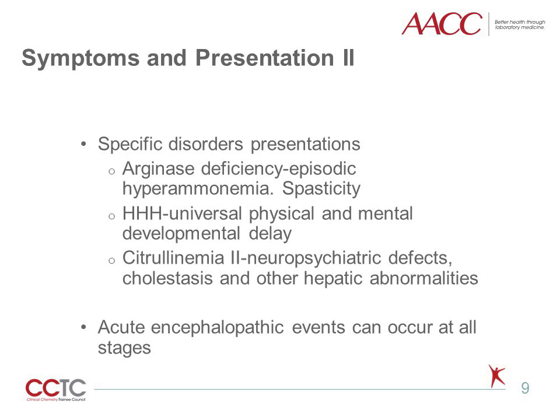Patients with arginase deficiency present in later infancy to preschool years with delayed physical and intellectual growth. They can also have severe spasticity affecting the lower extremities. Children with citrullinemia type 2 can have cholestasis and fibrosis, developmental delay, hypoproteinemia, and hypoglycemia. Citrullinemia type 2 adults can have regular episodes of elevated ammonia and psychiatric symptoms. In general, acute encephalopathy events can occur at any time and can be the first telltale sign of a urea cycle disorder, especially for those in late-onset disease.